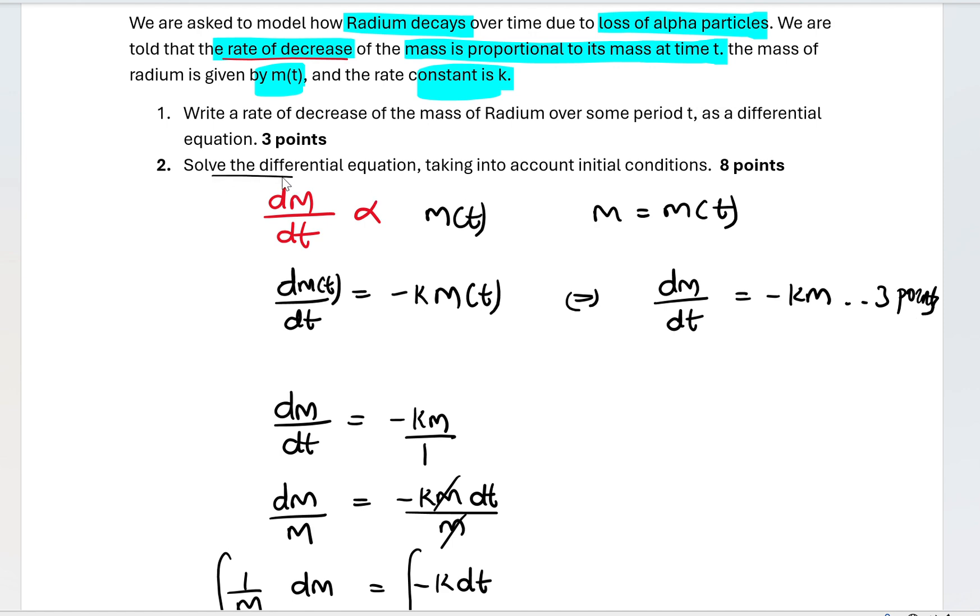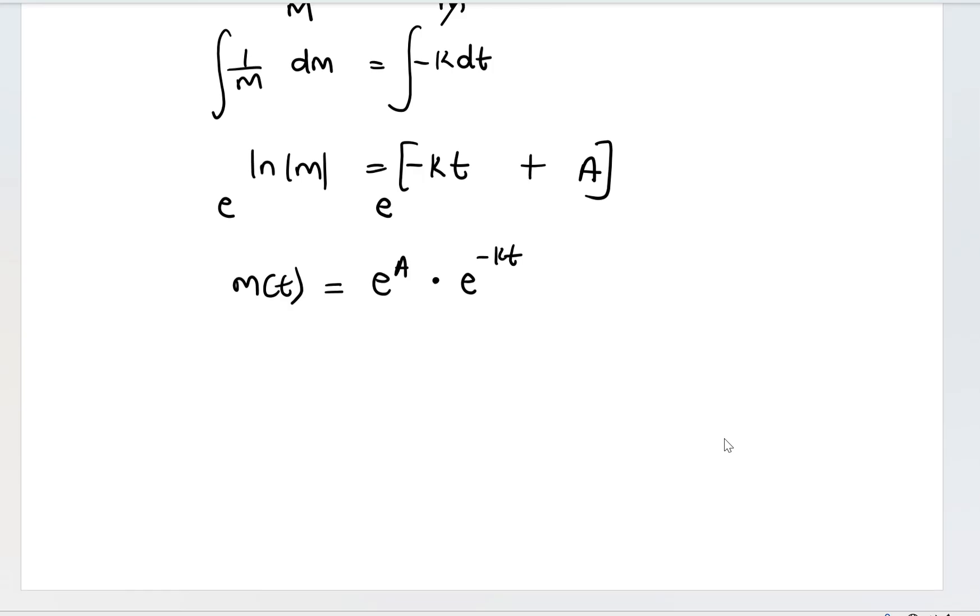Solving this differential equation, you get eight points. A constant to the power of a constant is another constant, which I can just replace with a constant b multiplied by e^(-kt). I've solved my differential equation: m(t) is equal to be^(-kt).